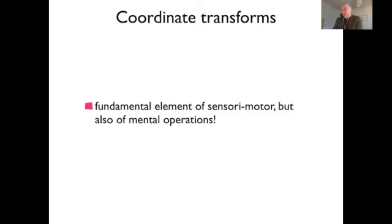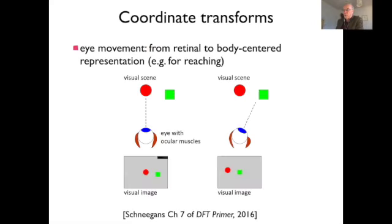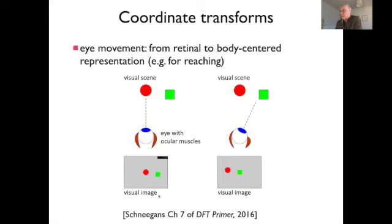The transformation of information to reference frames that appropriately capture the level at which objects remain constant is important if we want to build working memories — representations without input — which is what all cognition is based on. The most intuitive example is the retina. In this transformation from retinal to body-centered or scene-centered, if you fixate on the red object then the red shows up to the right of the left one in retinal coordinates, and if you shift your gaze to the green object, the green is at center and the red is to the left.